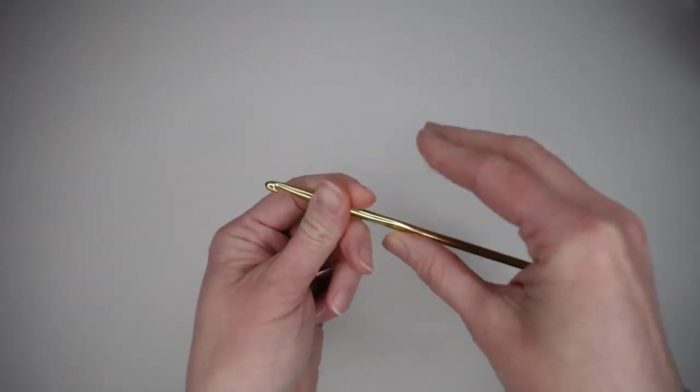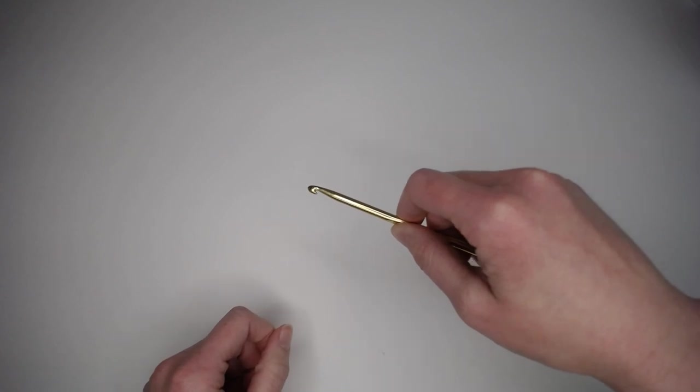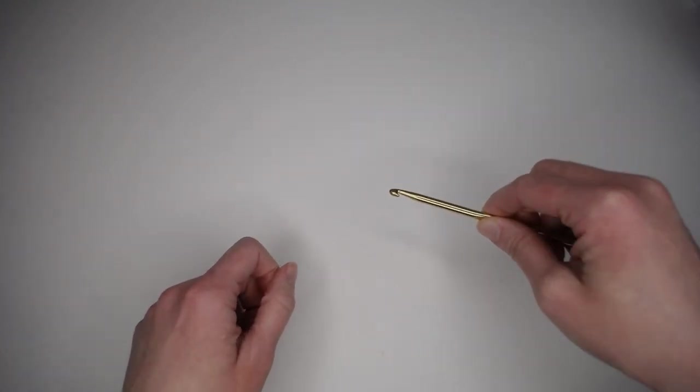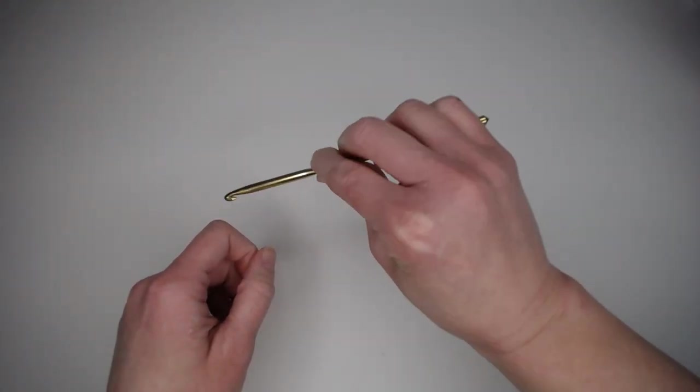People hold their crochet hooks however they're most comfortable. But if you hold your crochet hook like a knife, like you're going to cut something, that is known as a knife hold. And usually people will go in, stitch, out, in, stitch, out.